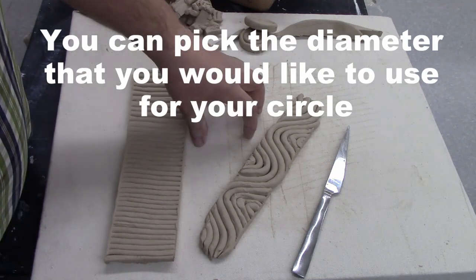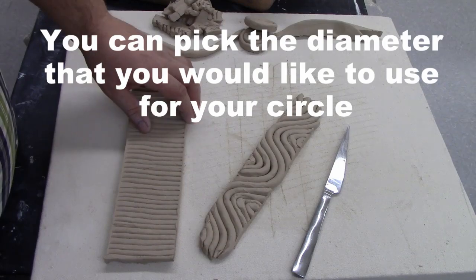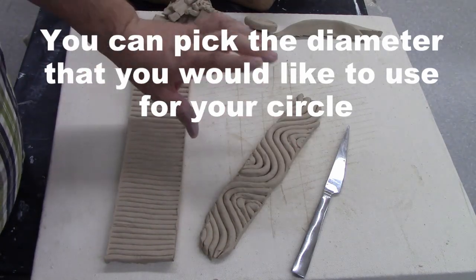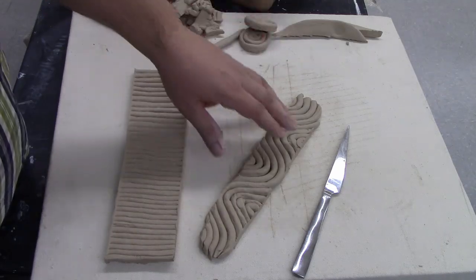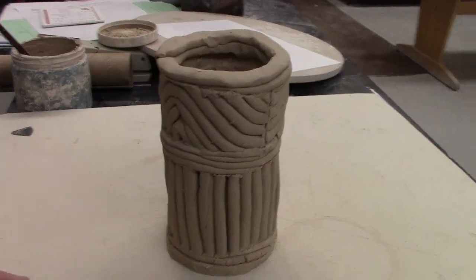The next step is to cut out a circle and start building your vase. When you build this way, you want to make sure that you score and slip everything on. I'll show you a quick version and then show you when it's all done.